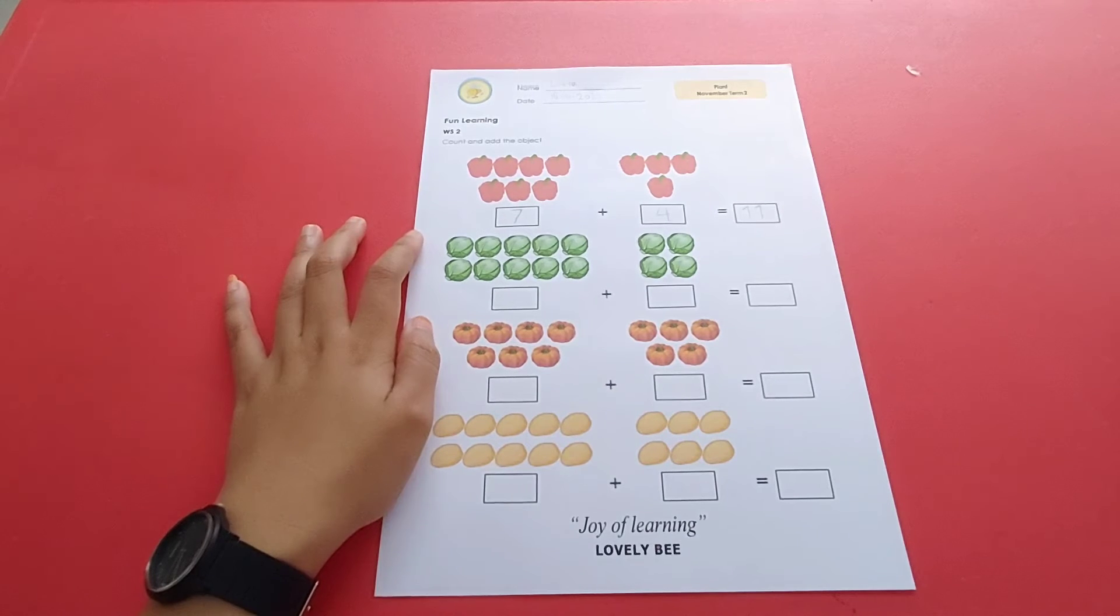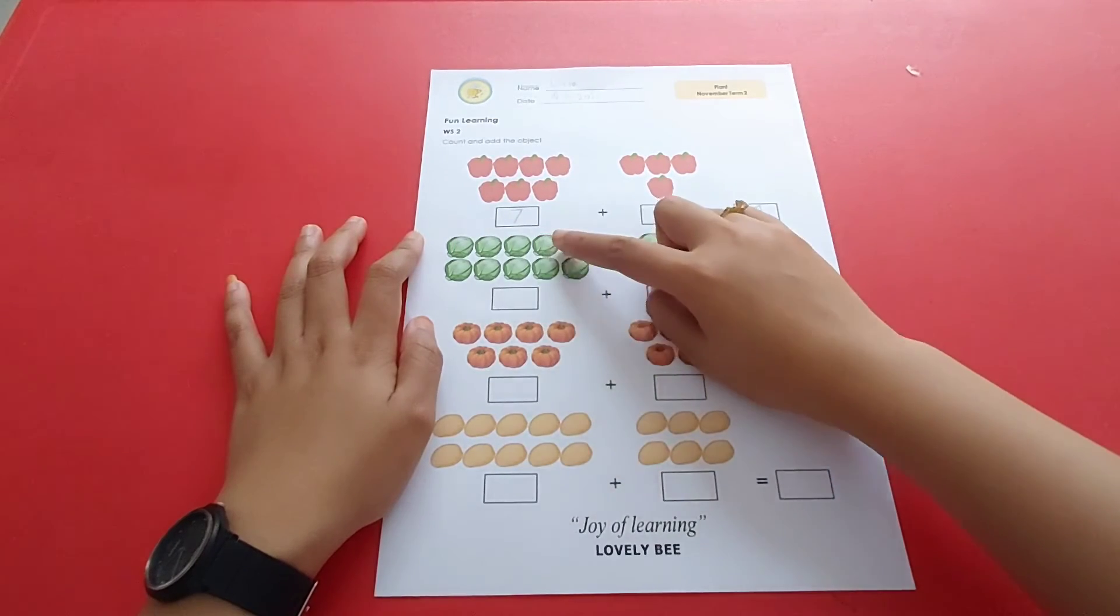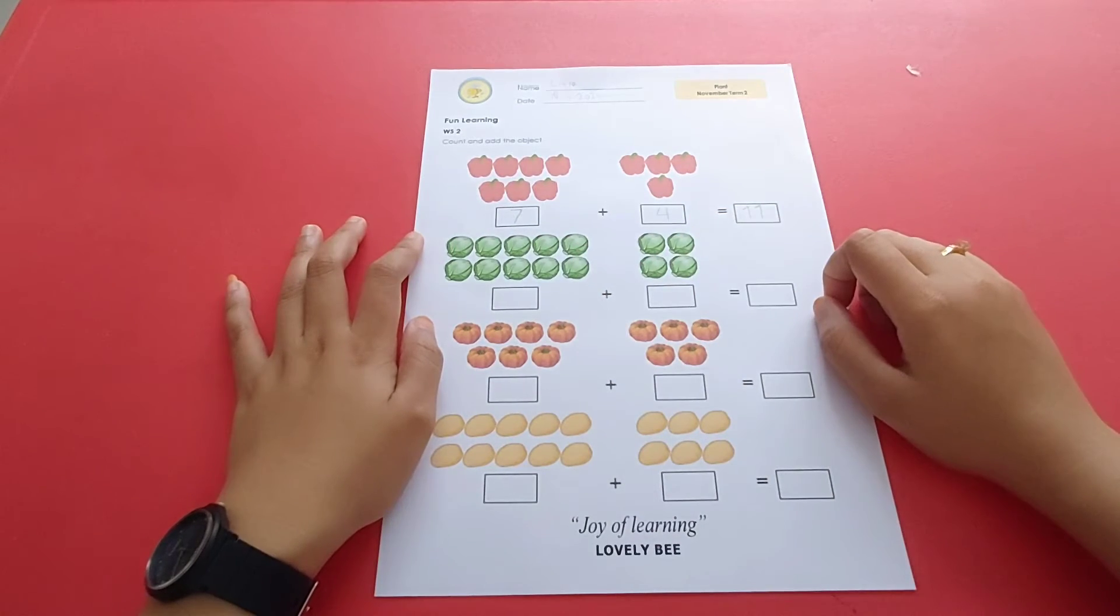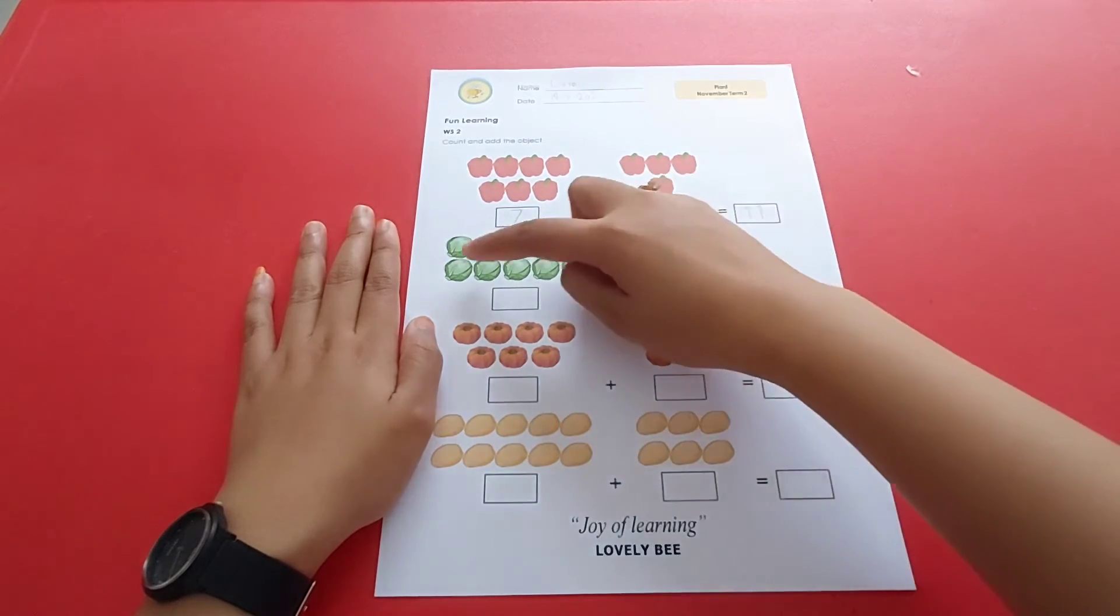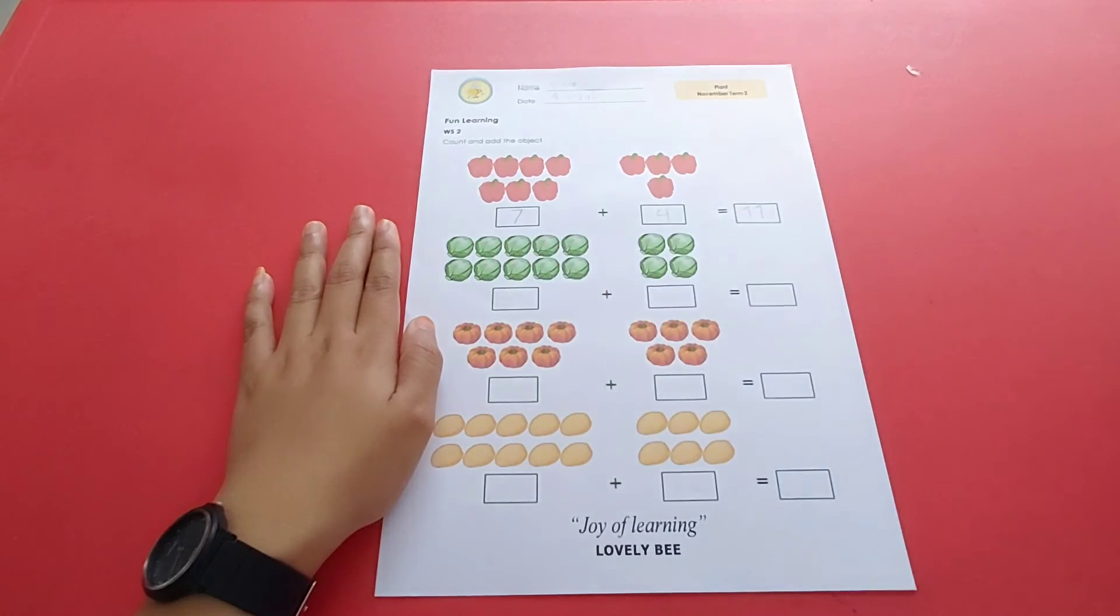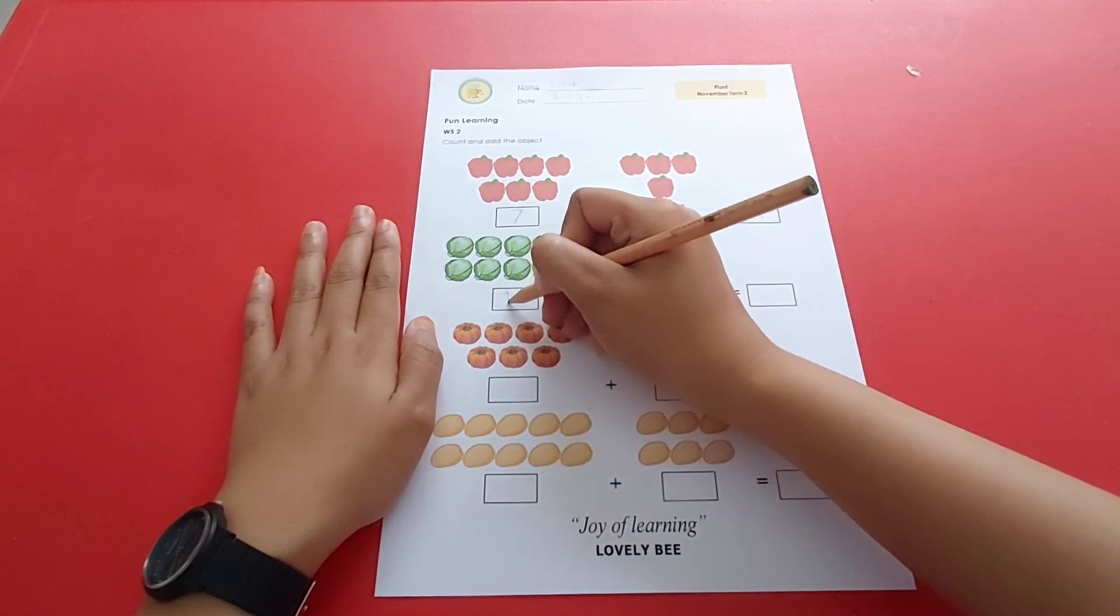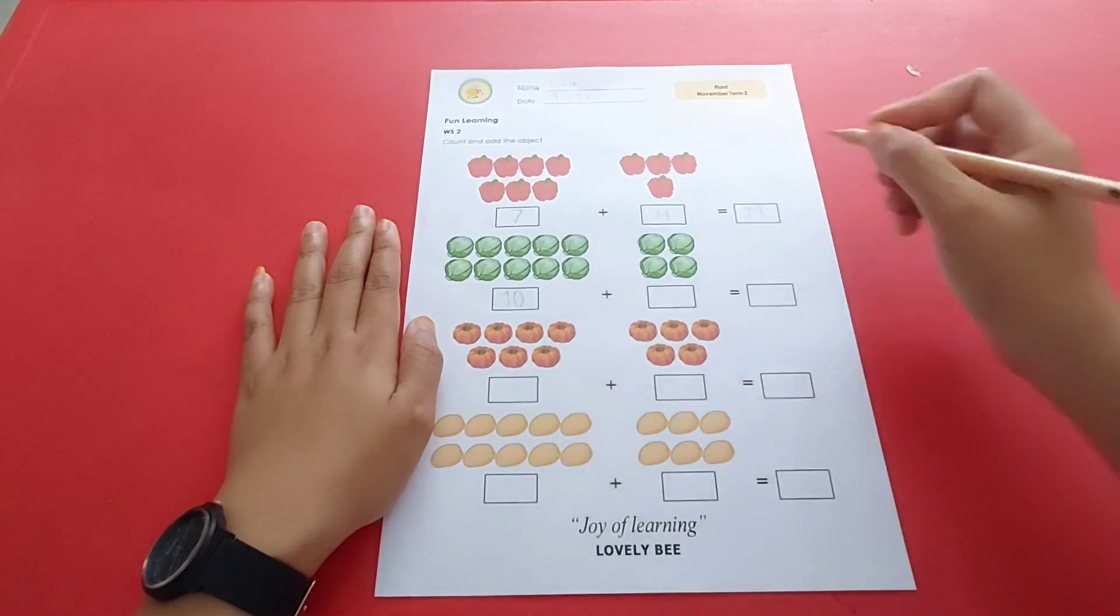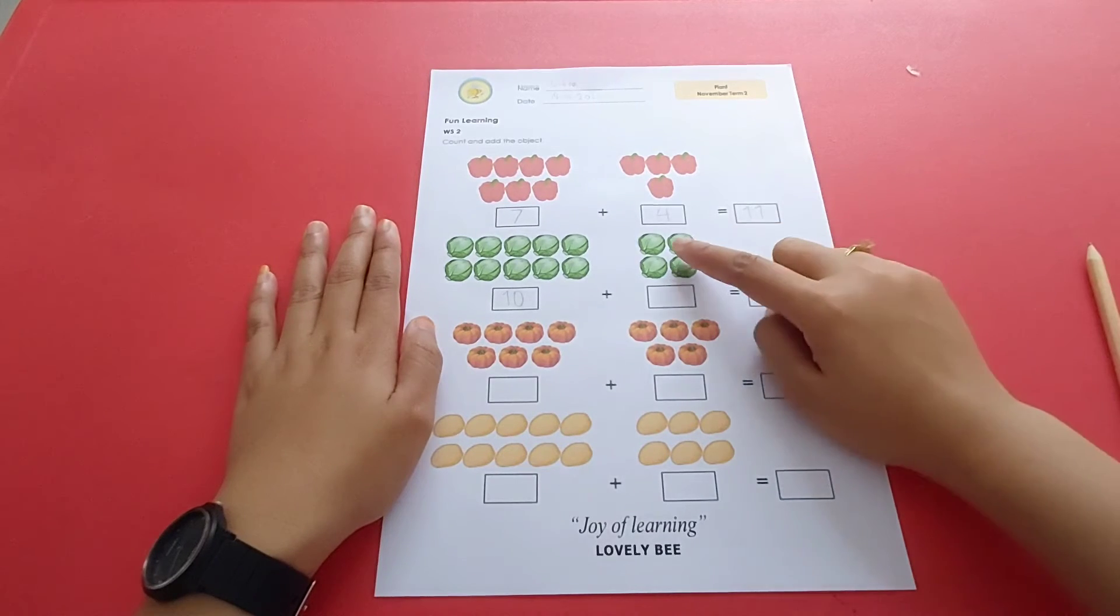Mari kita coba kerjakan satu soal lagi. Ada berapa kol yang ada di sini? Mari kita hitung: 1, 2, 3, 4, 5, 6, 7, 8, 9, 10. Ada 10 kol. Mari kita tulis angka 10 disini. Oke sekarang kita hitung kol yang ada di sini: 1, 2, 3, 4.